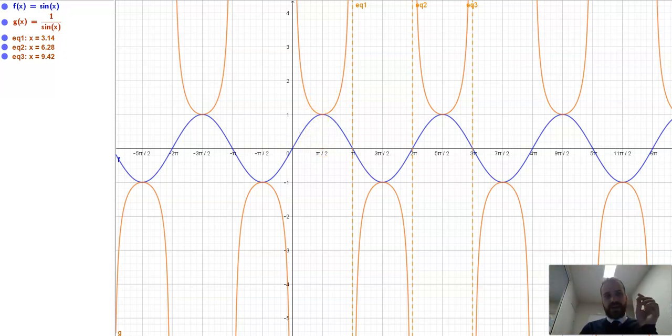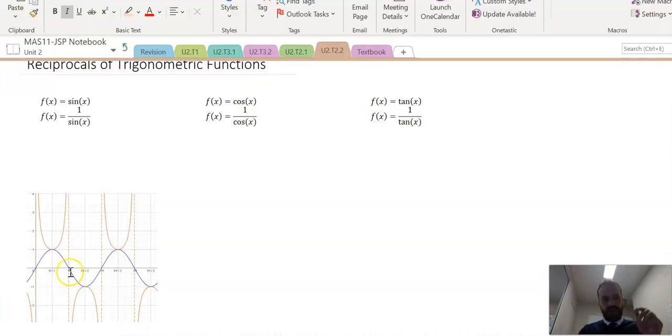Okay, so that's our sin x and 1 over sin x. Now this graph is so useful, it has its own name. Instead of it being 1 over sin x, we can just write it as cosec x. Okay, so 1 over sin x can be written as cosec x. They are exactly the same thing.